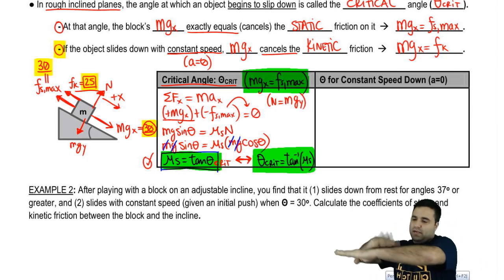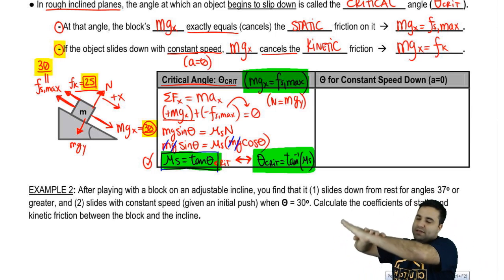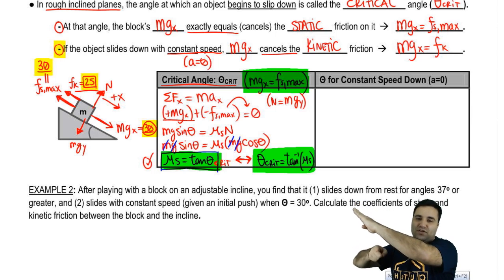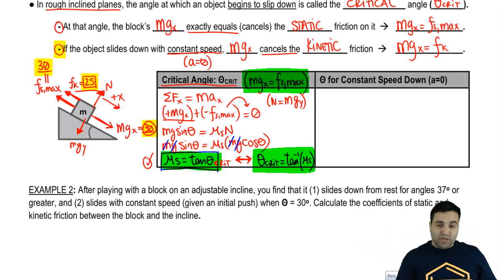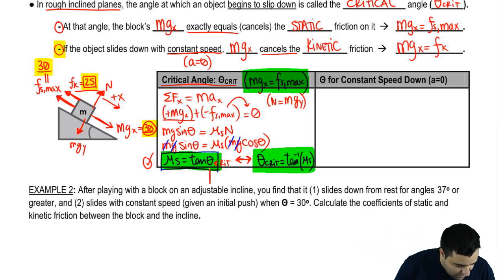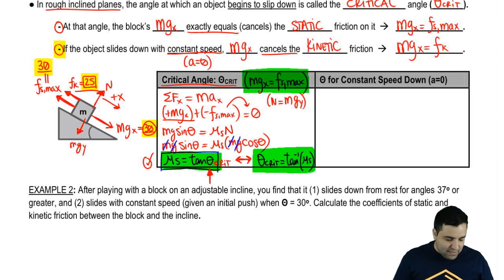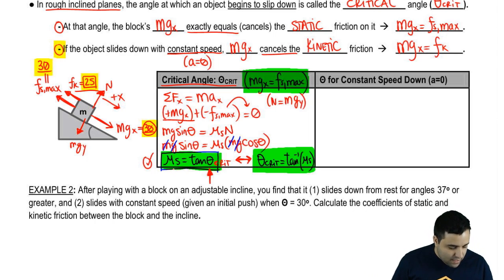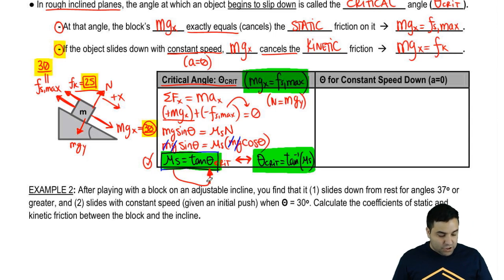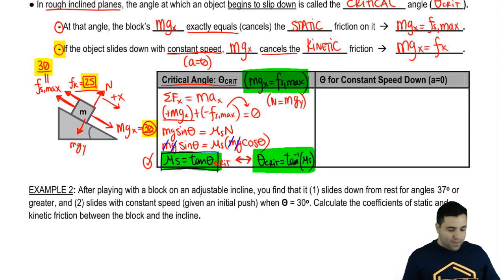You set up a block on an incline and tilt it — you can even use a calculator on your arm — and the second it starts moving, measure the angle with a protractor. Once you have that critical angle measurement, plug it into the equation and you've experimentally determined the static coefficient of friction.